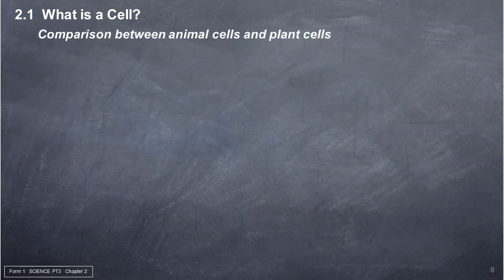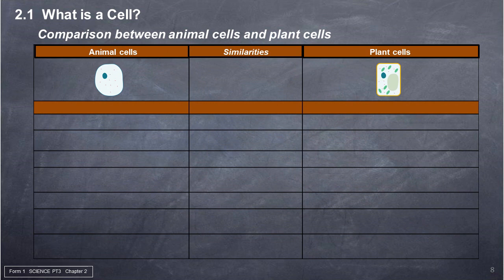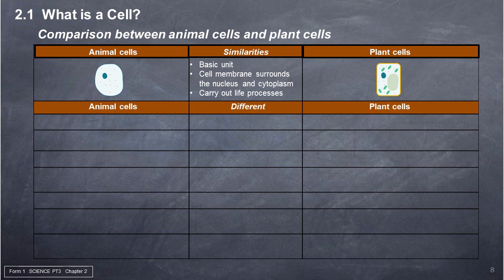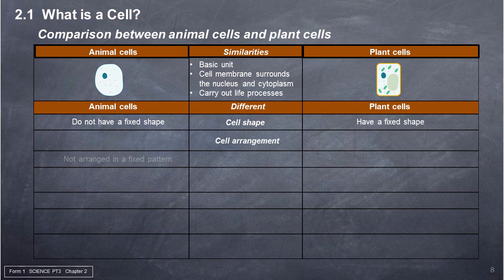Comparison between animal cells and plant cells. Similarities: both are the basic unit of life; cell membrane surrounds the nucleus and cytoplasm; both carry out life processes. Differences — cell shape: animal cells do not have a fixed shape, while plant cells have a fixed shape. Cell arrangement: animal cells are not arranged in a fixed pattern, while plant cells are normally arranged in a regular pattern.